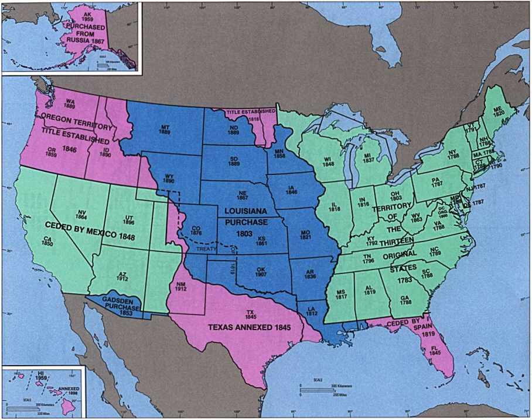Panama Canal Zone: The Panama Canal Zone was an unorganized U.S. territory located within the Republic of Panama. It was established under the Hay–Bunau-Varilla Treaty in 1903 and disestablished in 1979 under the Torrijos-Carter Treaties. Panama gained full control over the Panama Canal in 1999.